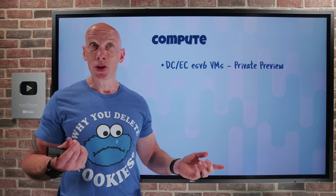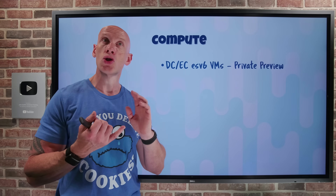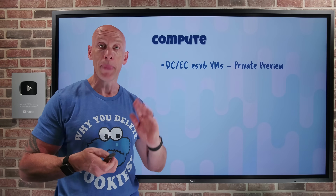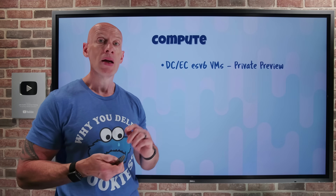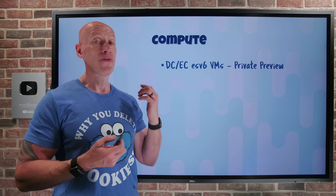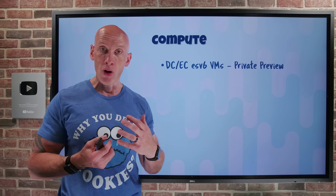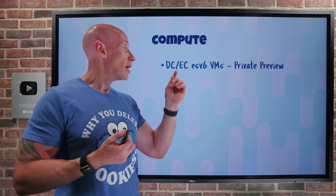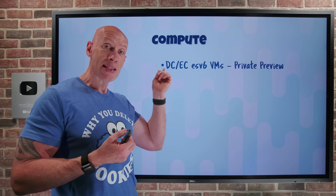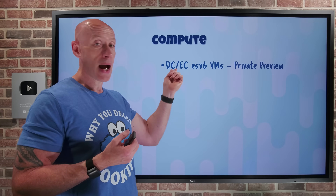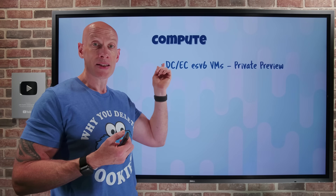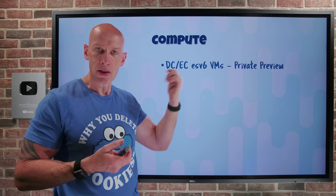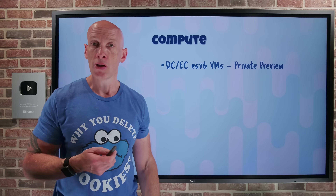They have Azure Boost, so you get huge storage IOPS, huge storage throughput, and huge network bandwidth. They're up to 512 GB of memory — up to 128 vCPUs for the DC and up to 64 vCPUs for the EC, because it has a higher memory-to-CPU ratio.